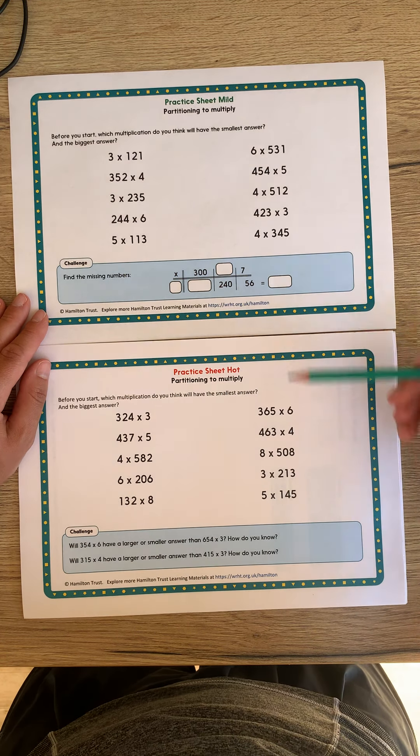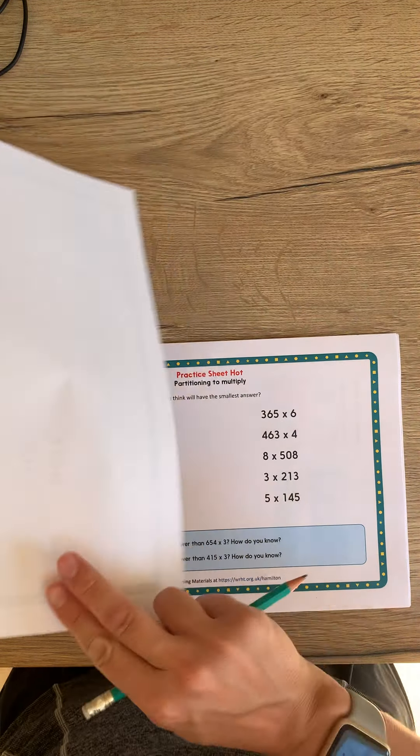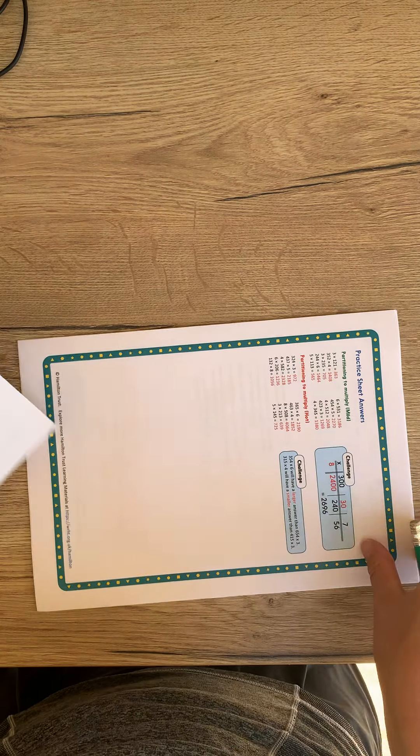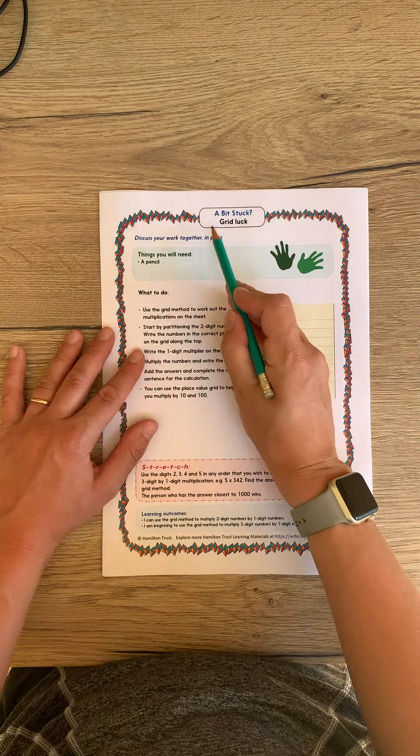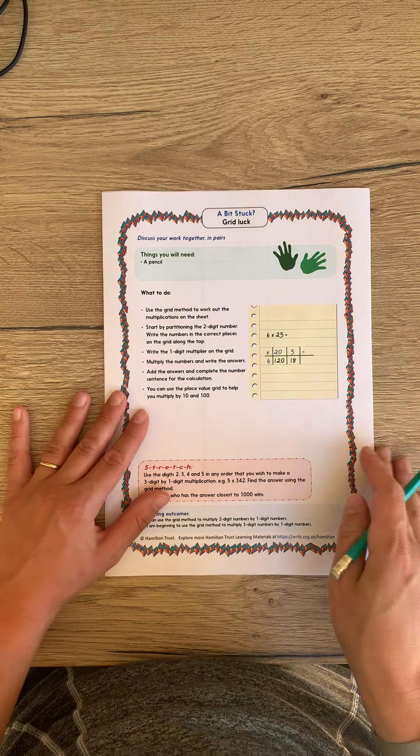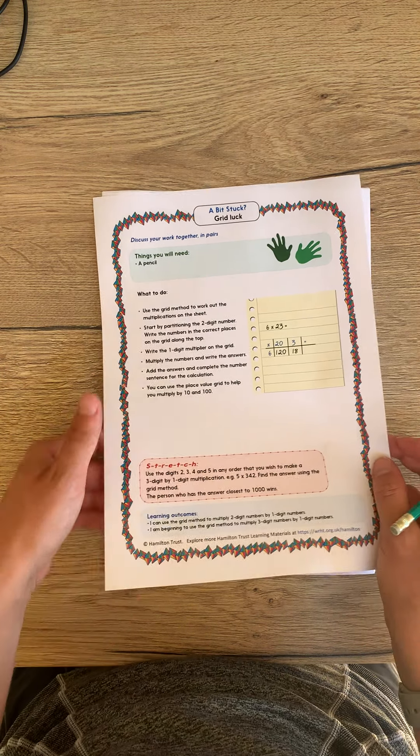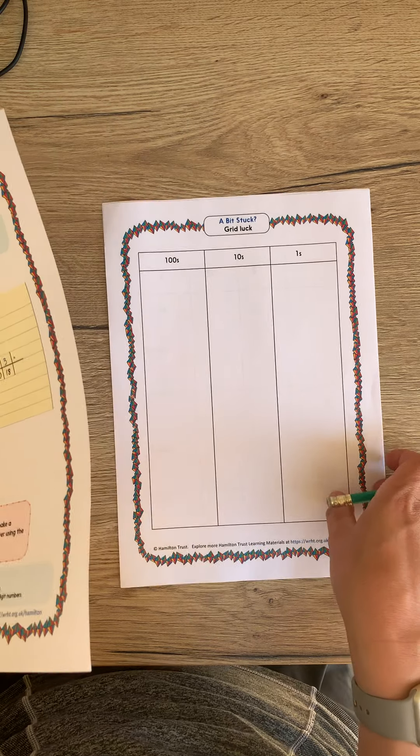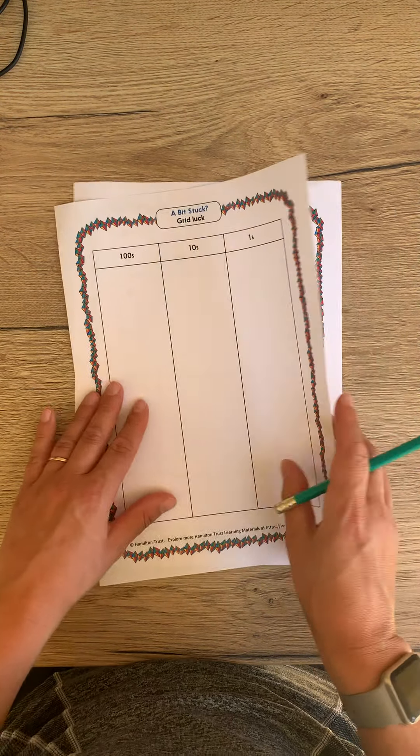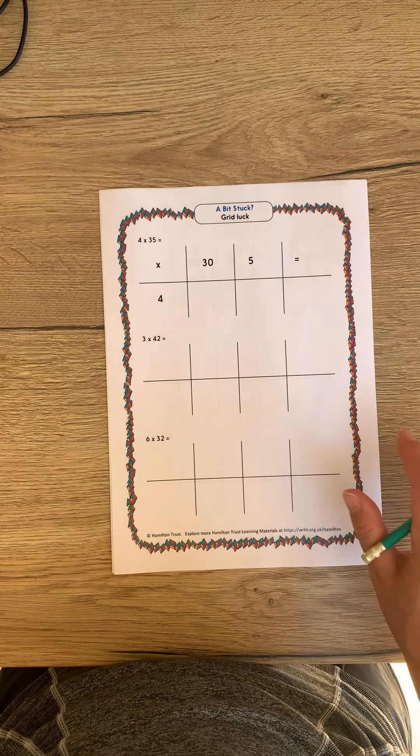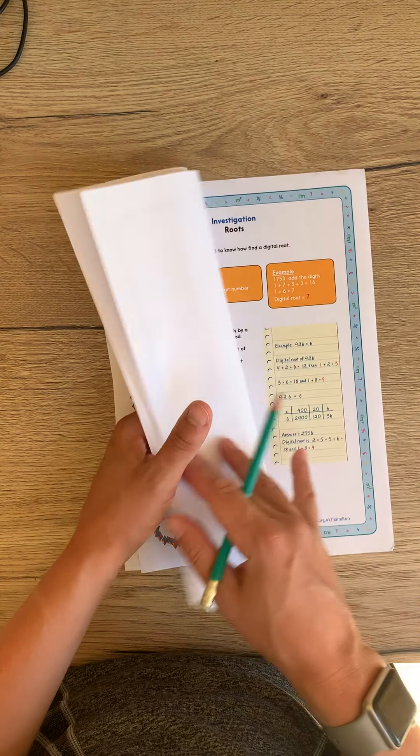That's the same for both of these, and there is a couple of challenges here. There is some answers for you to self-mark. There is a bit-stuck gridlock sheet. Read through those. Please do this with an adult. And there are some print-offs, which you can easily replicate in your maths books. There's just some grids here for you to have a go at.